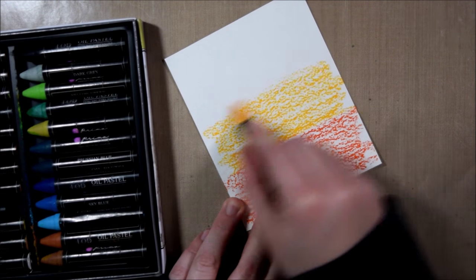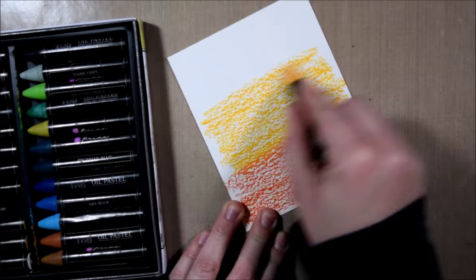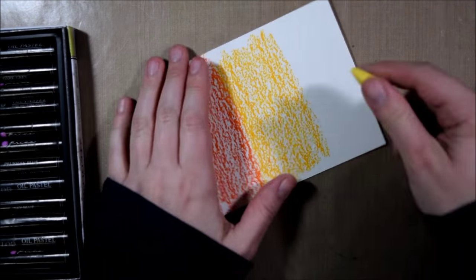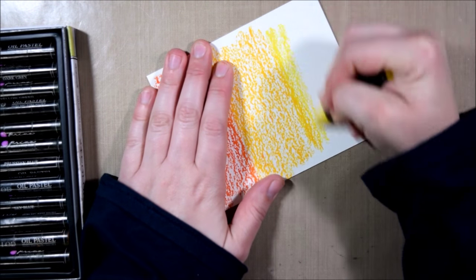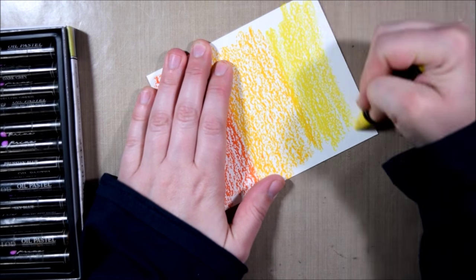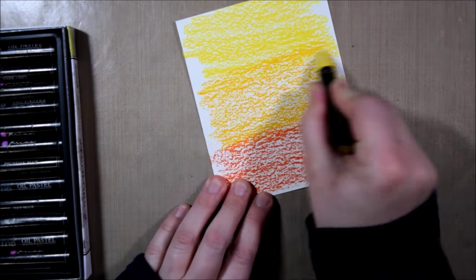The first thing that I'm doing is just taking some watercolor paper and scribbling a bunch of oil pastels in sort of an ombre-ish kind of thing, a color fade where I'm going from an orange to a yellowy orange, finally to a yellow.